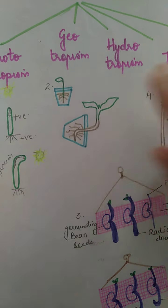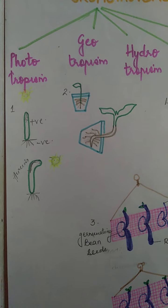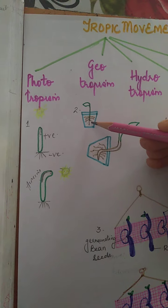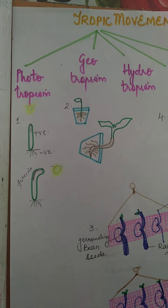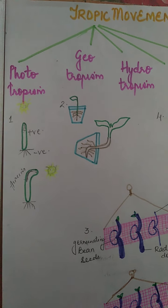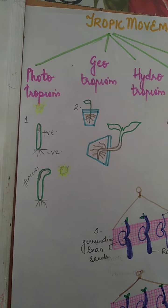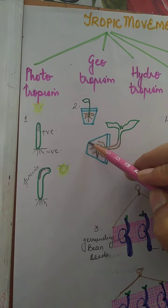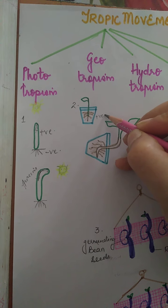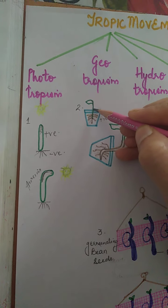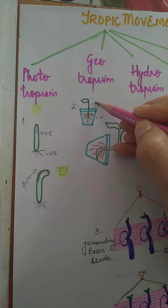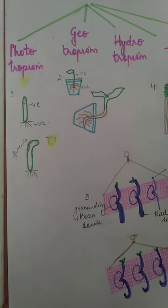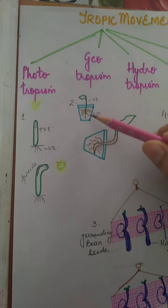The second tropic movement is geotropism. 'Geo' is related to gravity and the earth. The roots show positive geotropism — they grow towards the gravity. Shoots grow against the force of gravity, so they are negatively geotropic.